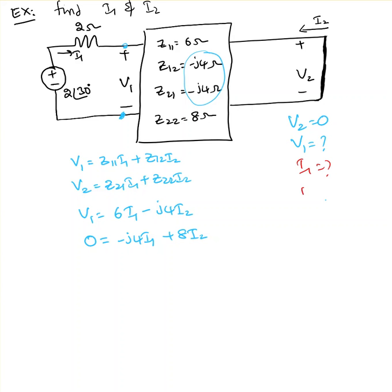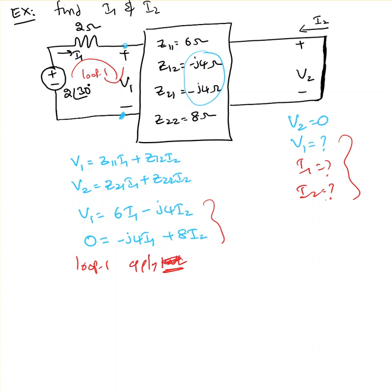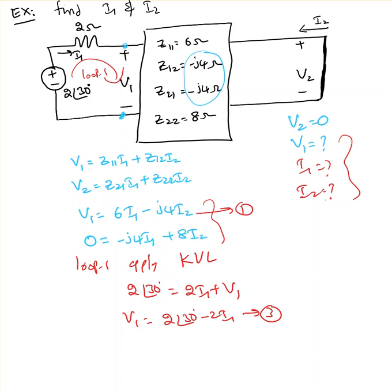I need one more equation. I'll get it by applying KVL in loop 1. Applying KVL: 2∠30° equals 2·I1 plus V1, so rearranging, V1 equals 2∠30° minus 2·I1. I'll call this equation 3.